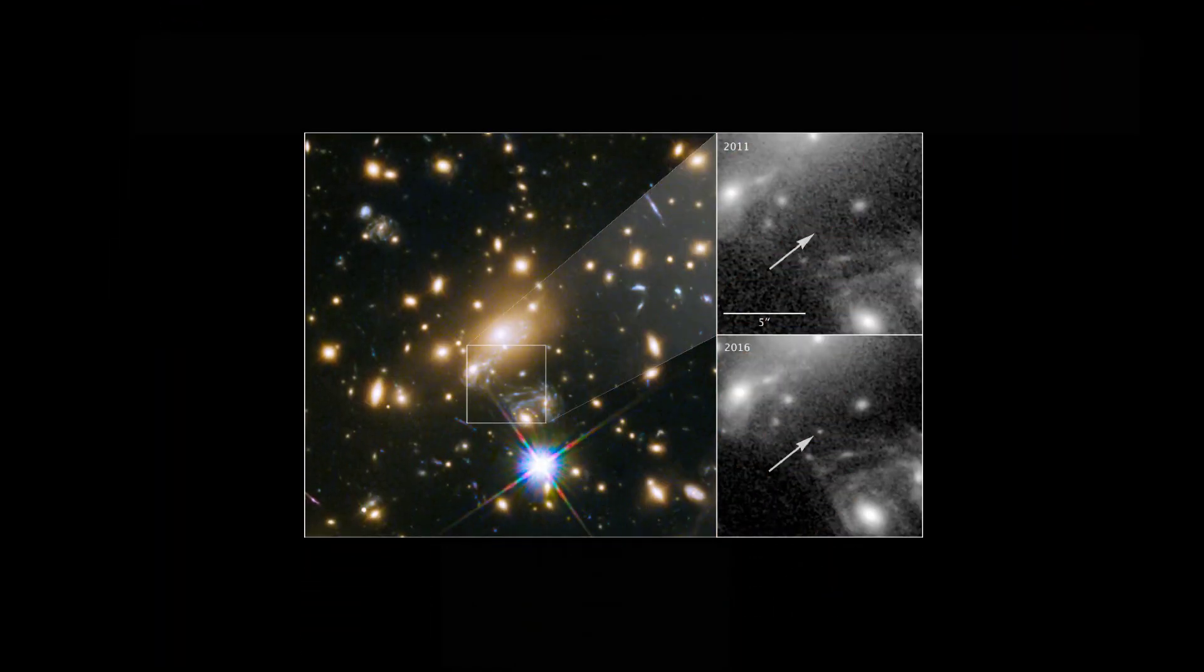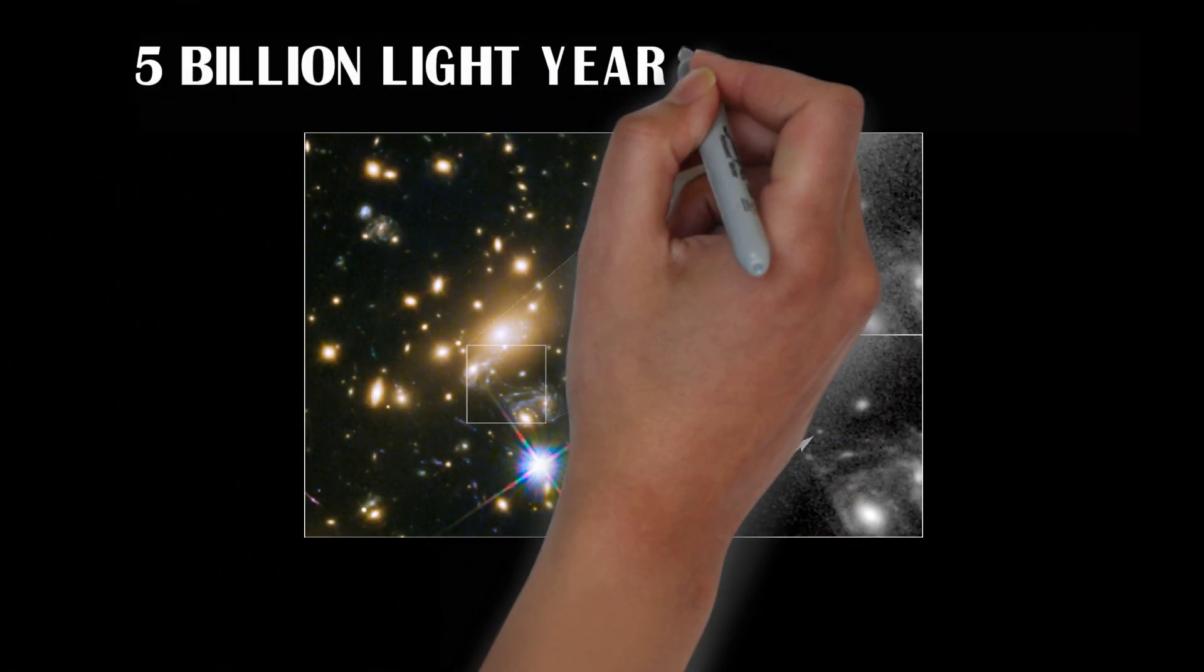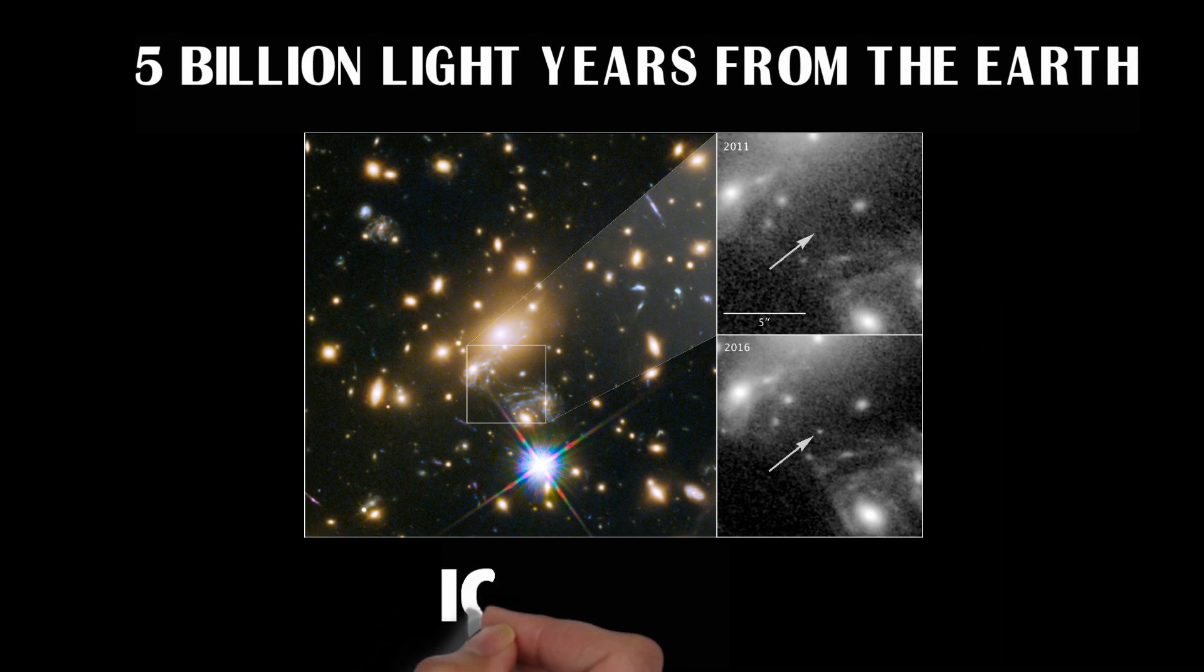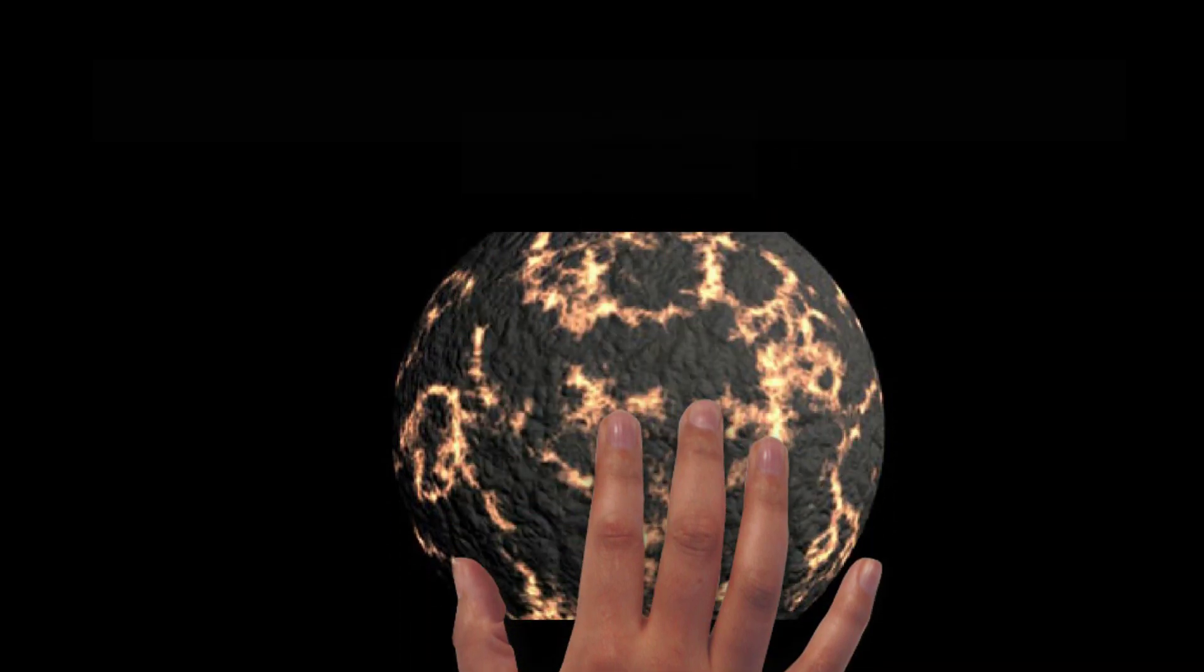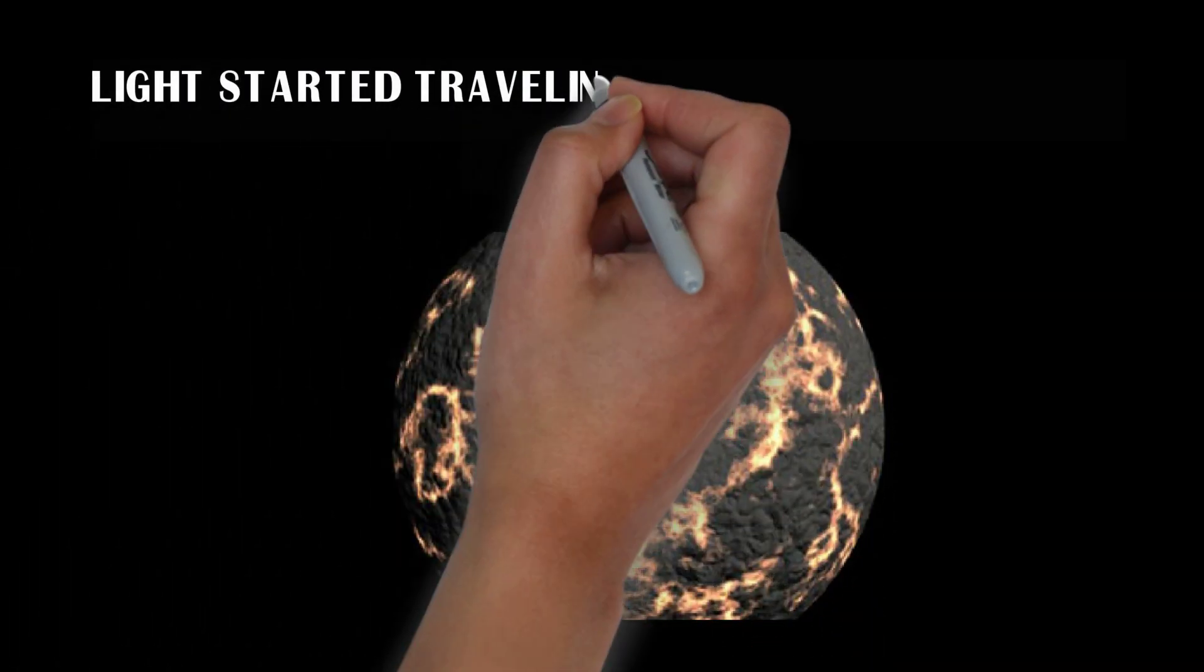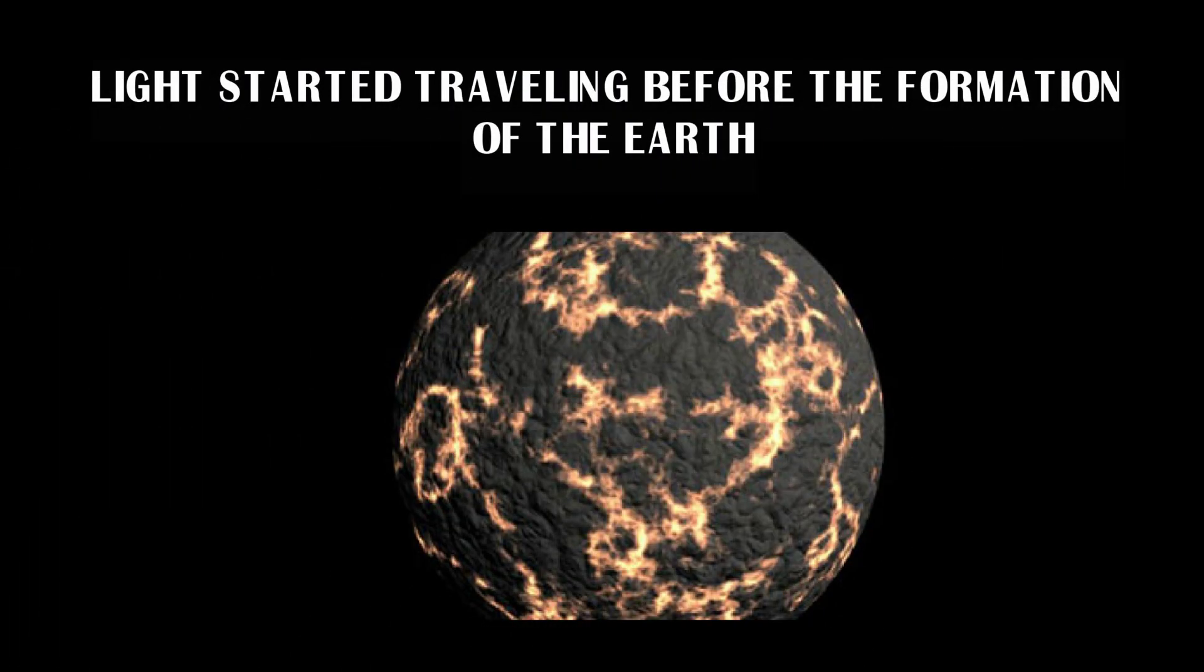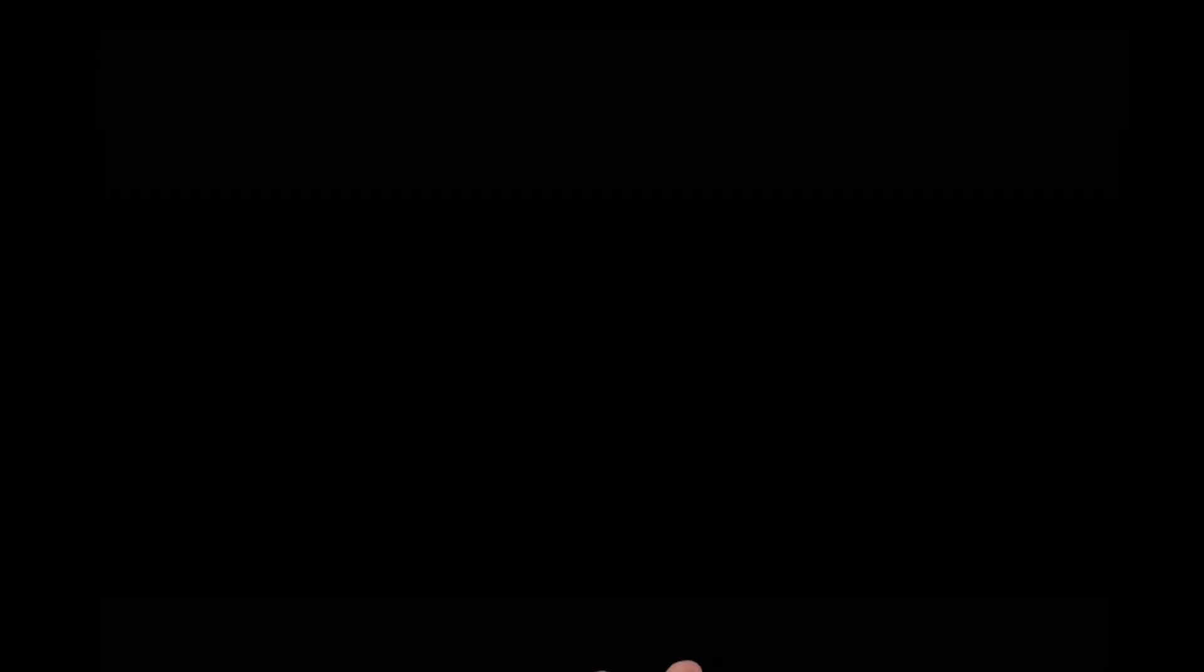Do you know the forest star we ever discovered is 5 billion light years away from the earth. It is called Icarus. That means the light started traveling from Icarus before the formation of earth. And you guys already know the earth formed 4.3 billion years ago.